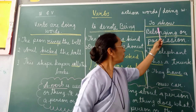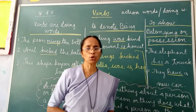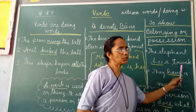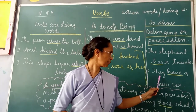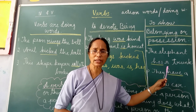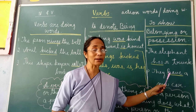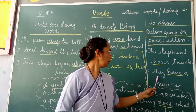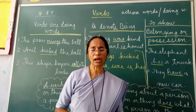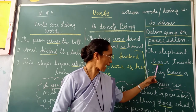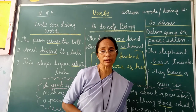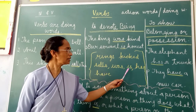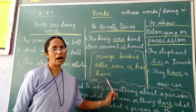Again, verbs show belonging or possession. Look at these examples. The elephant has a trunk. What belongs to the elephant? The trunk belongs to the elephant. So the word has shows possession. They have a trunk — what do they have? They have a trunk. The words has and have therefore are verbs.